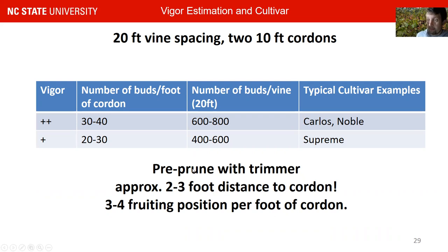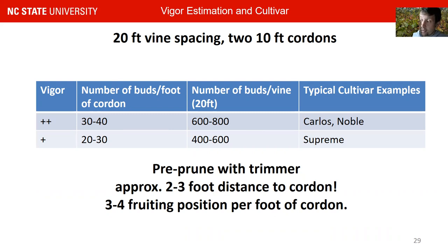We usually pre-prune with a trimmer. Depending on the vigor, there are some cultivars where you can keep 30 to 40 buds per foot of cordon, spaced out over two to three fruiting positions. With some cultivars like Supreme, you do want to be lower than that — around 20 to 30 buds per foot of cordon over a 20-foot vine spacing.